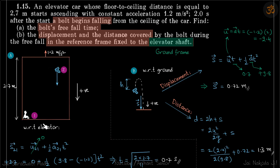We are given an elevator car which is moving up with an acceleration of 1.2 meters per second squared. The height of the car is 2.7 meters and a bolt begins to fall at time 2 seconds. We need to find the bolt's free fall time and displacement and distance covered by the bolt in the reference frame fixed to the elevator shaft.